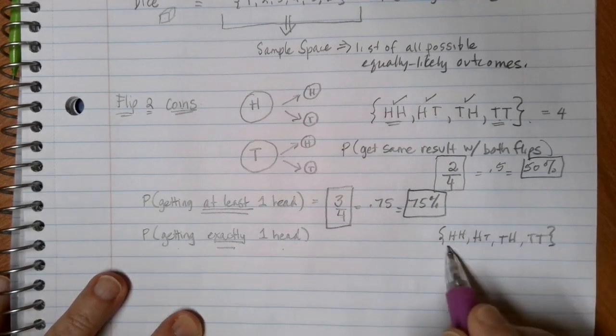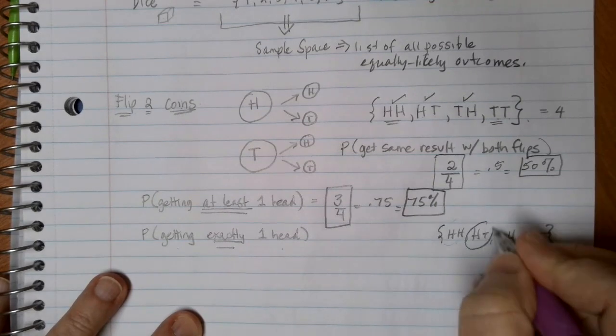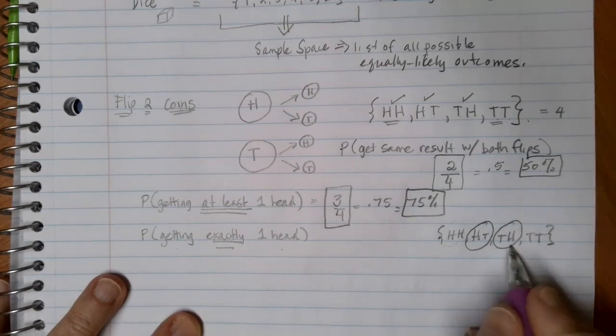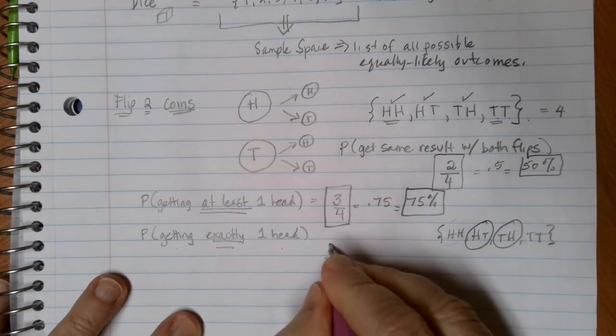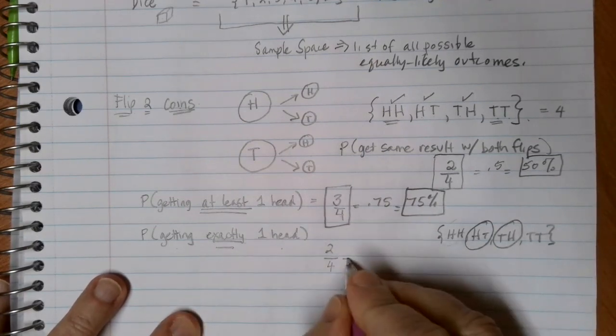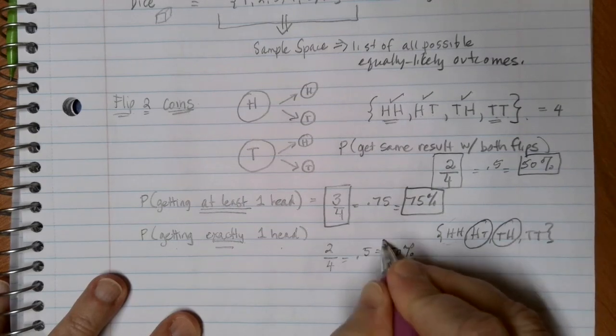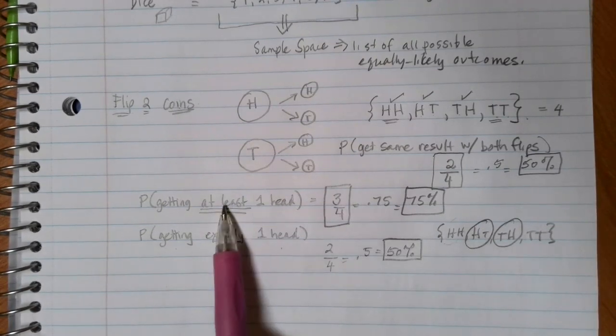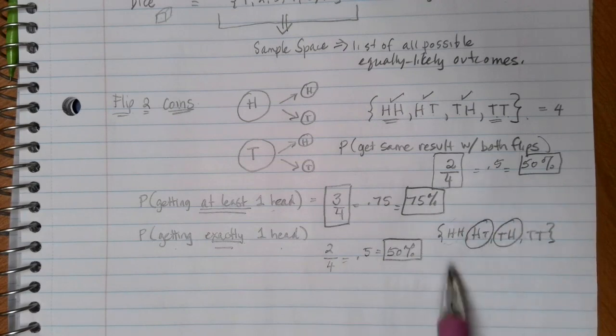If I'm looking at getting exactly one head, this time I can't include the heads followed by heads, because that's two. But I can count the heads and then tails. I can also count the tails and then heads. Each of those has exactly one in its value. So four equally likely outcomes, two of which get me exactly one head, which is 0.5 or a 50 percent chance that I'll get one of each. So again, pay attention if you're looking at exactly or at least. At least means one or more exactly is going to be only one in that resulting list.